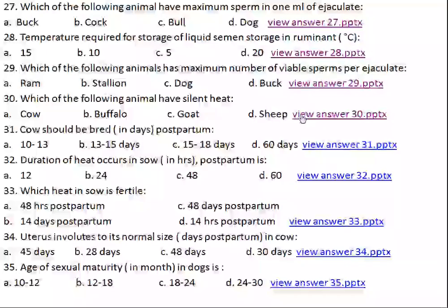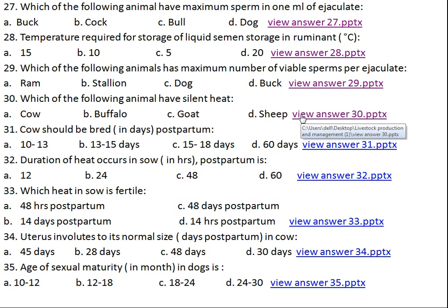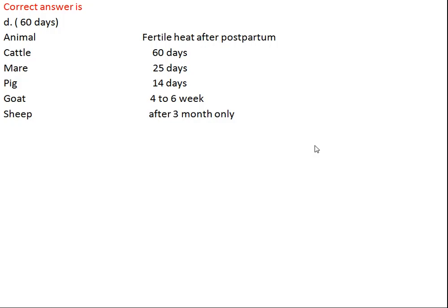Question number thirty-one: cow should be rebred how many days postpartum? Option A: 10–30 days, Option B: 13–15 days, Option C: 15–18 days, Option D: 60 days postpartum. The right answer is Option D, 60 days postpartum. In cattle, the first fertile heat after postpartum is at 60 days, because during this time the cow's uterus needs time to regenerate so it can maintain pregnancy again. Mare is 25 days postpartum, pig 14 days, goat 4–6 weeks, and sheep 3 months postpartum.